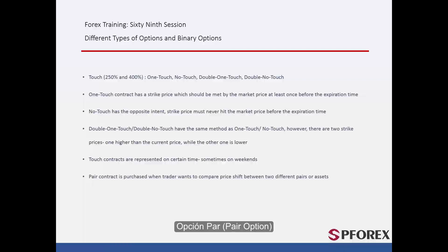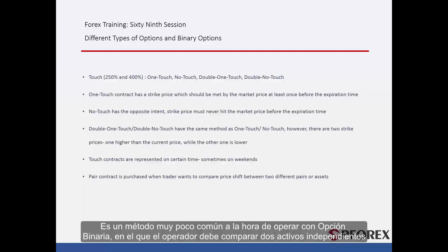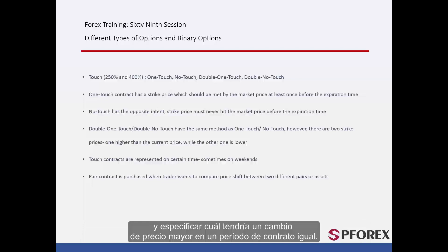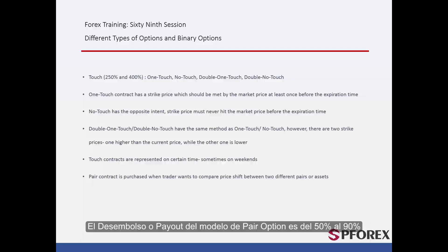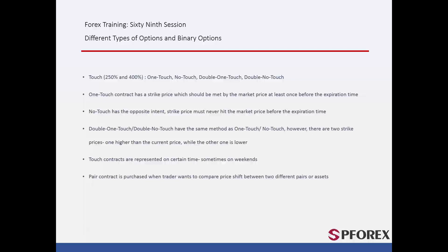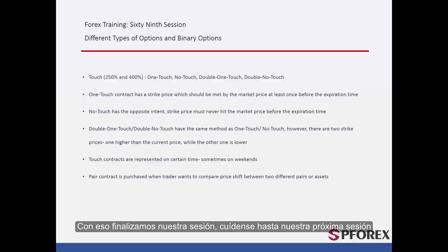Pair option is a rare method of trading binary options in which a trader must compare two independent assets and specify which one would have a higher price change on an equal contract time. Payout of a pair option model is from 50% to 90%. That concludes this session — until next time and the final session, take care.